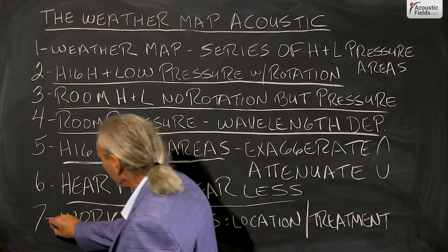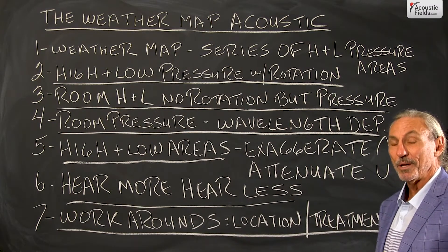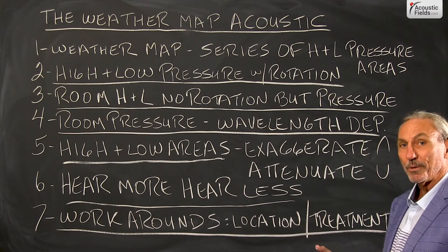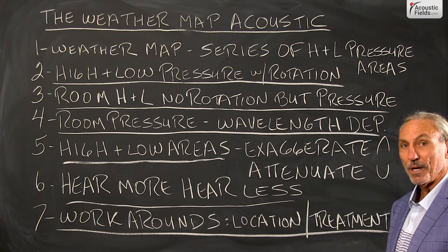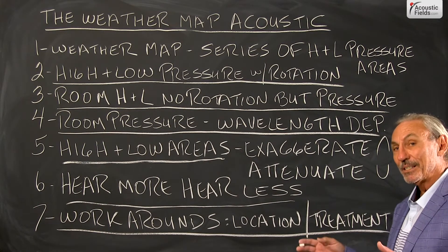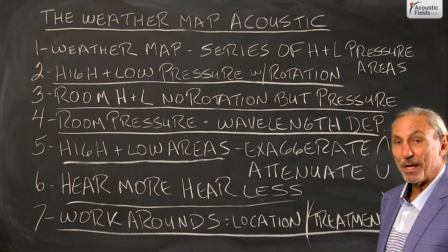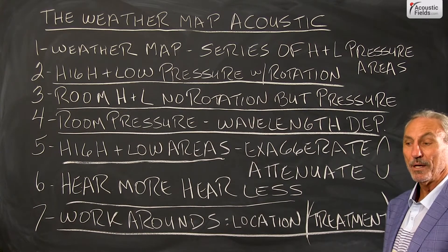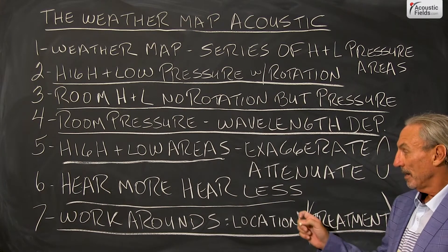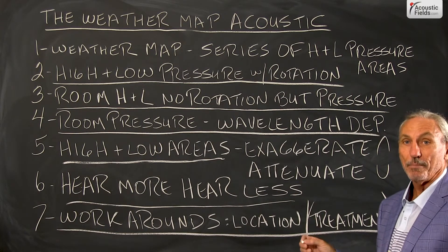What are our workarounds? You can talk to any mixing engineer about this because he does it all the time if his room isn't the way he wants it. You pick a location between the high and low pressure areas where you don't have this exaggeration and attenuation — but that's hard to find in small rooms, and the location you're looking for is probably not ideal for your usage. So treatment is the key, room dimensions are the key, and room volume is the key from the beginning. If you get it right at the beginning, you minimize the amount of treatment, minimize the exaggeration and attenuation, and minimize the high and low pressure areas in the room.